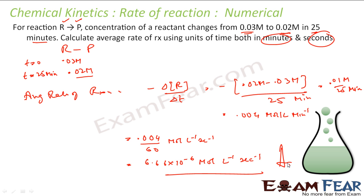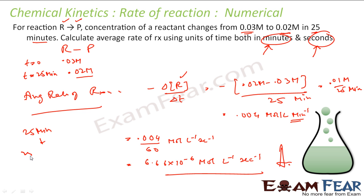The rate of change of concentration of the reactant is given. We need to find the average rate of reaction, which is the rate of change of reactant by T with a negative sign. With the values we get the answer in moles per litre per minute. The question asks for values in both moles per litre per minute and moles per litre per second. We divide by 60 because minute is in the denominator — 25 minutes equals 25 × 60 seconds, so dividing by 60 converts it.